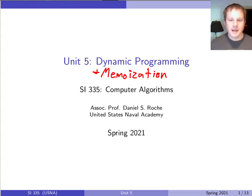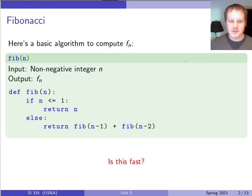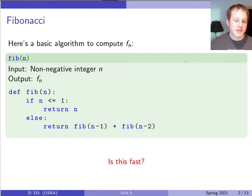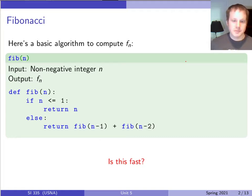We'll start with memoization using the classic example: computing Fibonacci numbers. The point isn't to make you the best at computing Fibonacci — it's just a great example for thinking about when memoization and dynamic programming are useful. We'll also see other circumstances where these techniques are valuable.